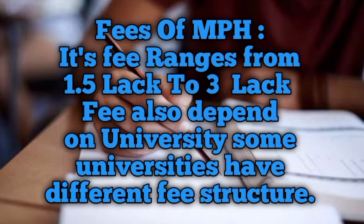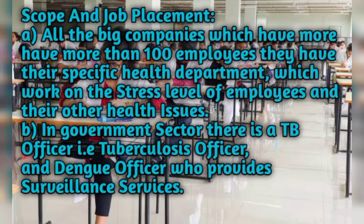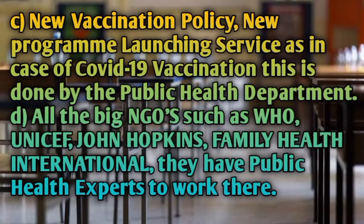Scope and job placement: All big companies with more than 100 employees have a specific health department working on the stress levels and health issues of employees. In the government sector, there is a TB (tuberculosis) officer and a dengue officer who provides surveillance services. Government sector MPH officers are offered very good jobs with a lot of scope after your graduation degree.